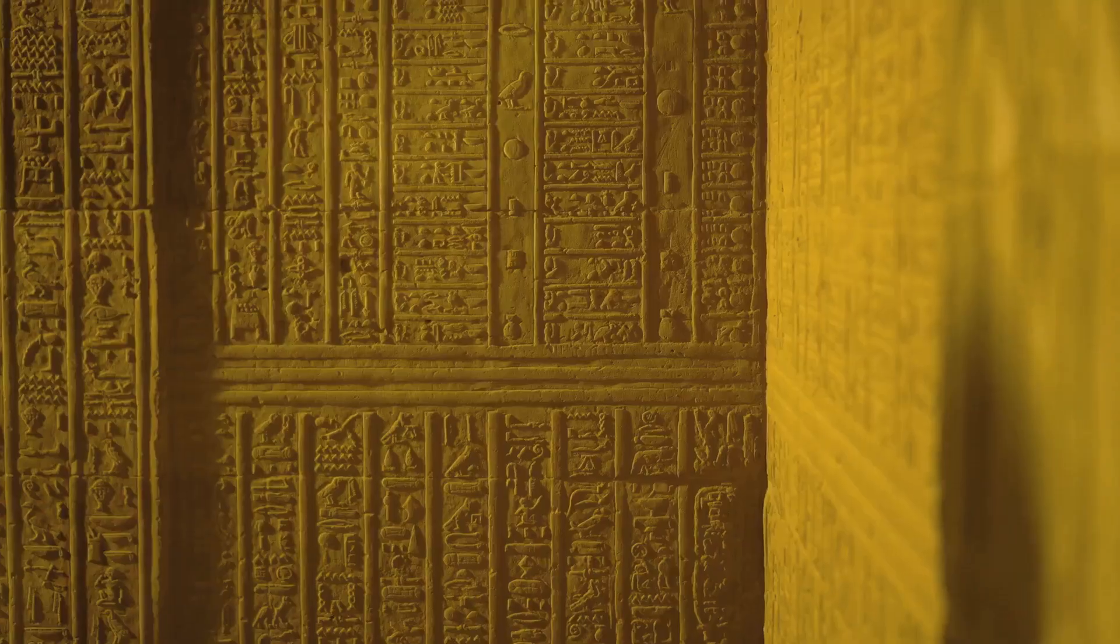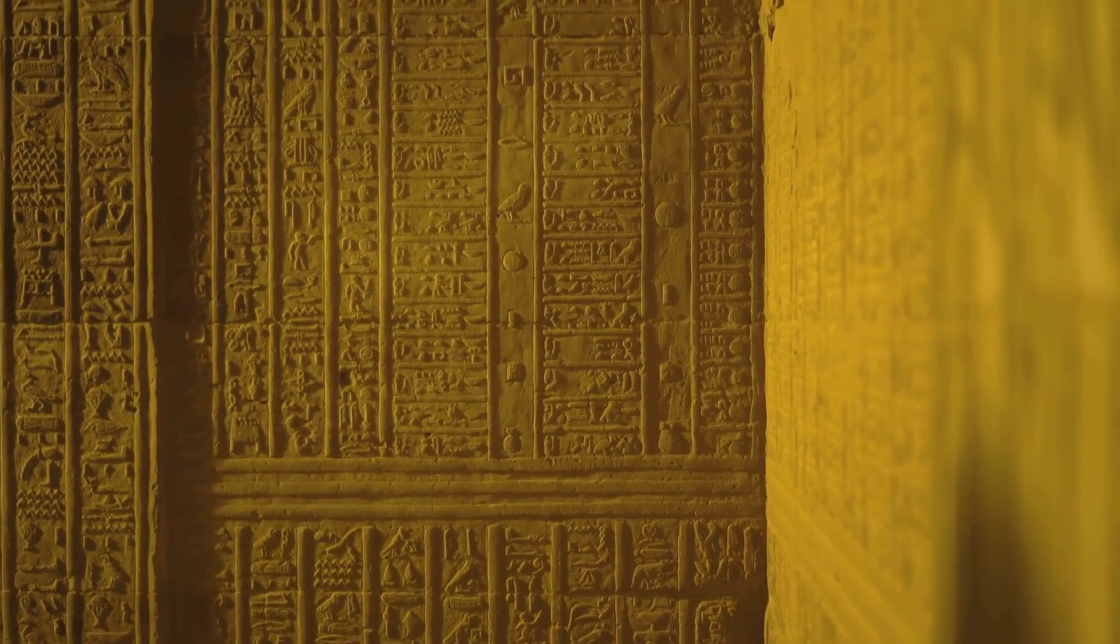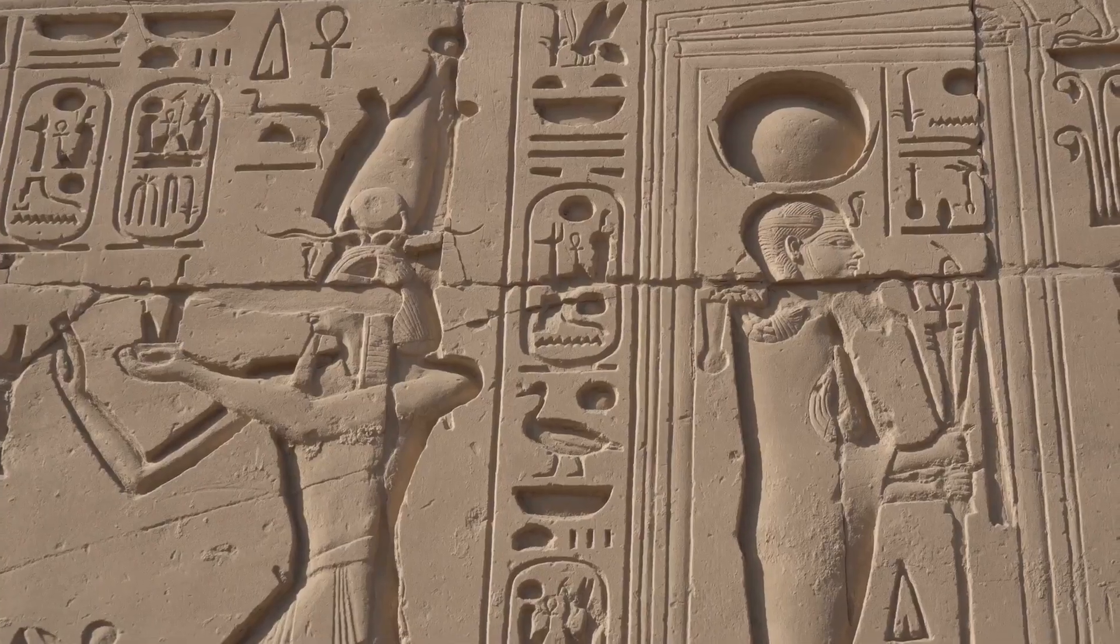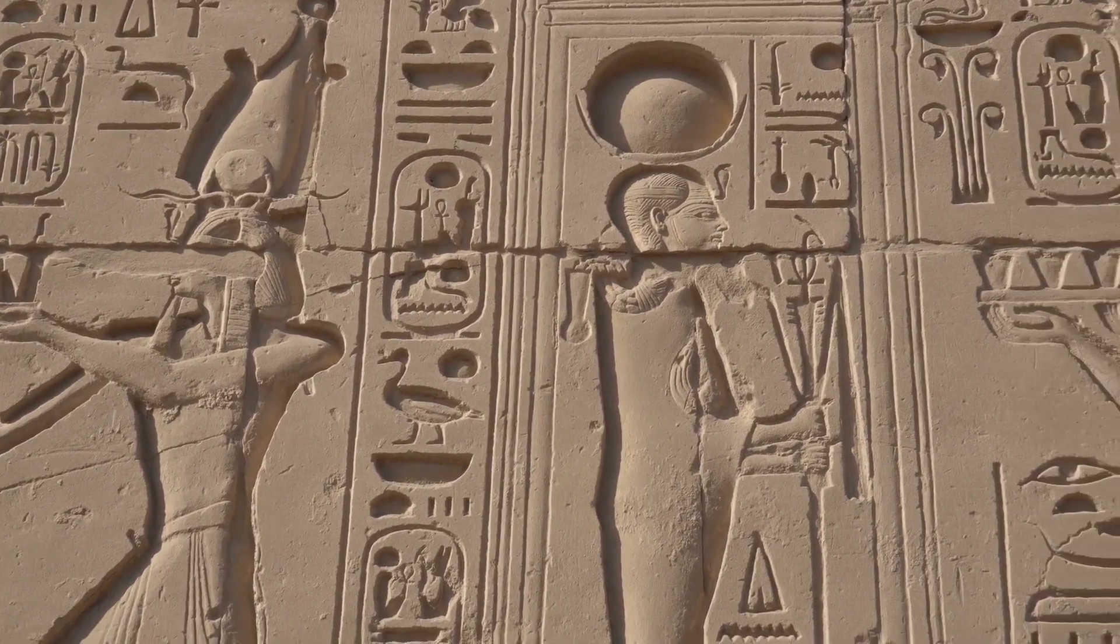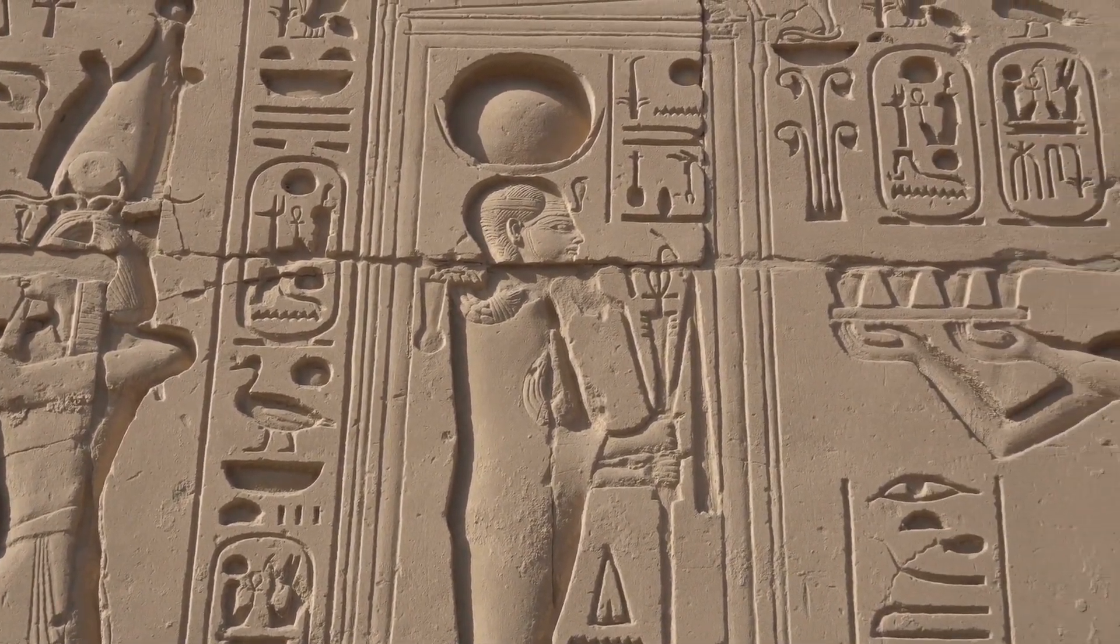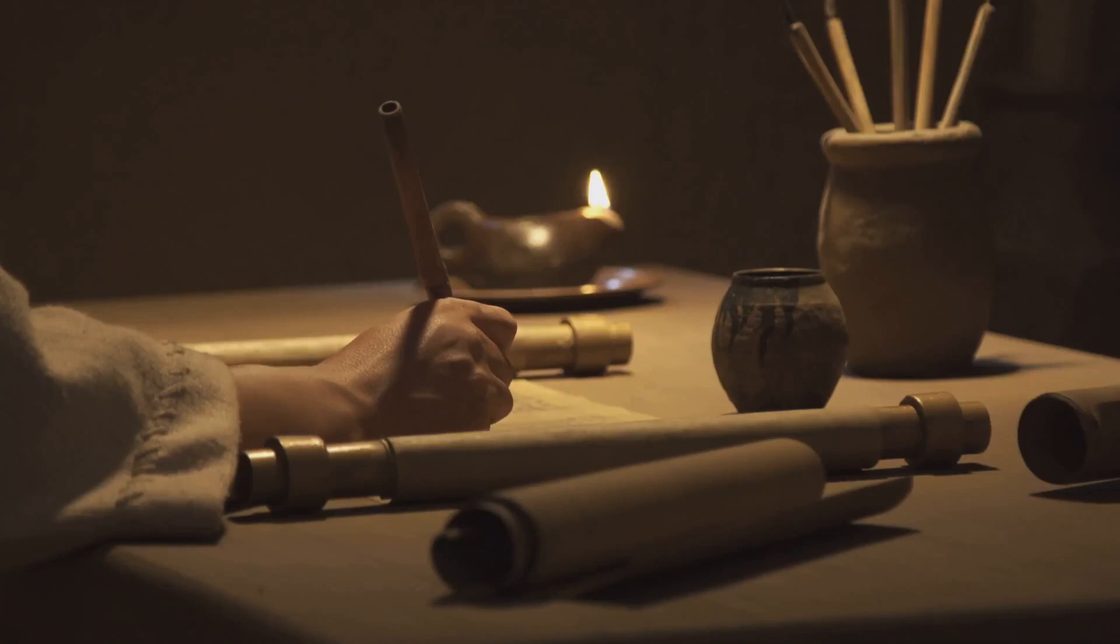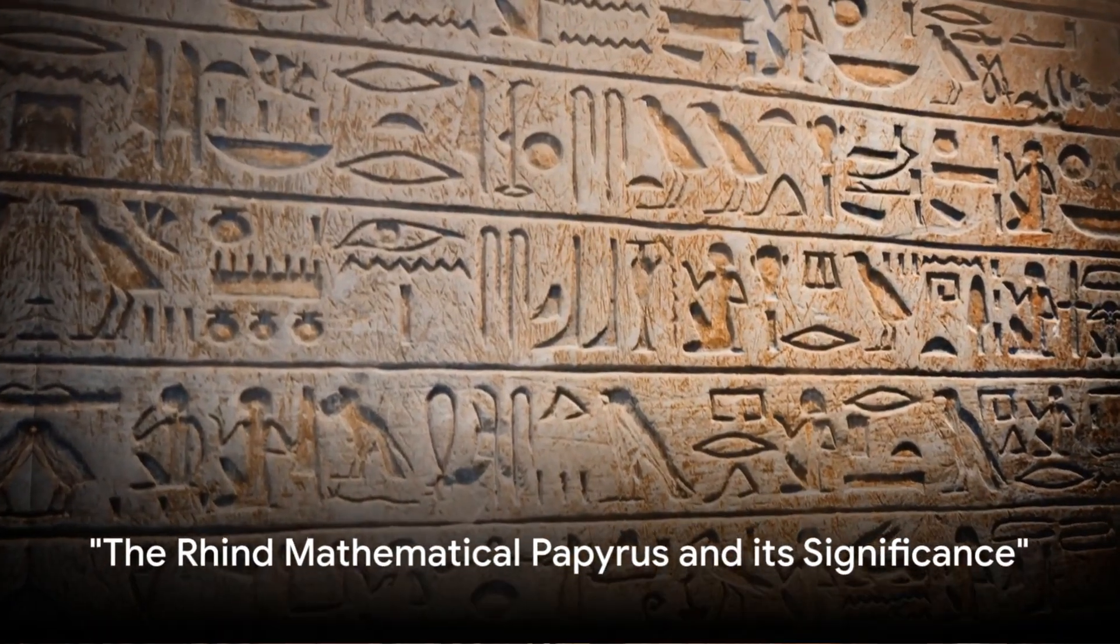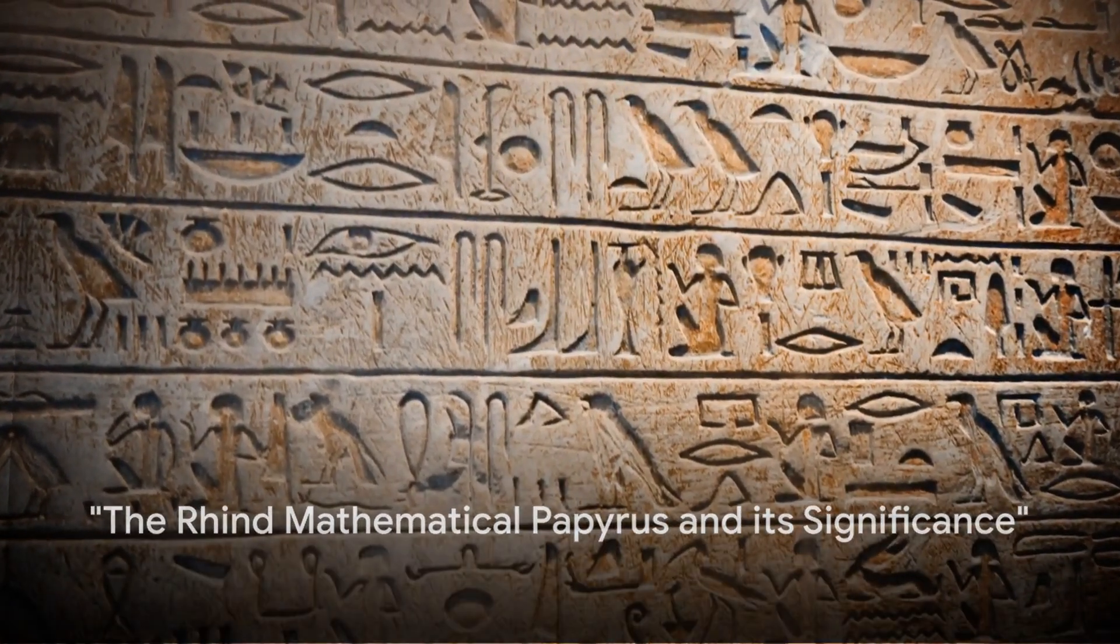One of the most intriguing prospects lies in the oldest known mathematical text, the Rhind Mathematical Papyrus. This ancient document holds a wealth of mathematical wisdom. Its lines are testament to the ingenuity of our ancestors. This ancient text, the Rhind Mathematical Papyrus, is our link to uncovering these hidden universes.